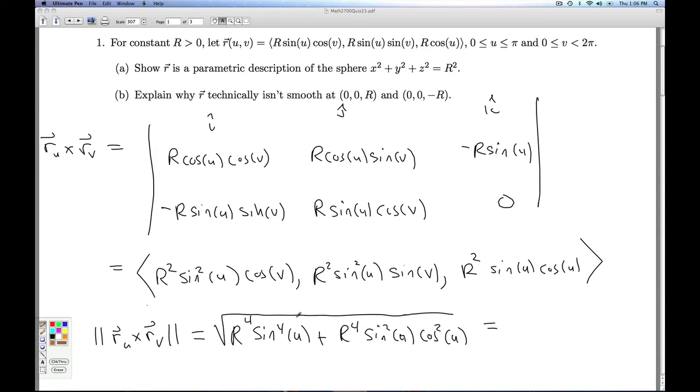So I can factor out an r to the 4th sine squared from each of these. That'll come out of the square root as an r squared absolute value sine of u. And what's going to be left inside when I factor that out? None other than sine squared u plus cosine squared u, which Pythagorean brings itself away to 1. I look at where u lives, and u lives between 0 and pi. And on that interval, the sine of u is always bigger than or equal to 0. And so this simplifies then to just r squared sine u.